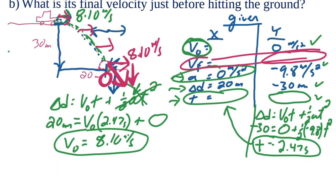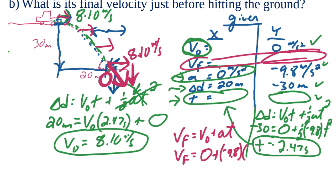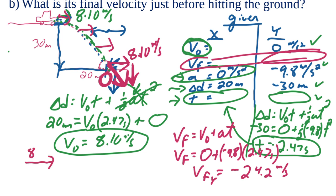To find the final vertical velocity, we use vf = v₀ + at, using only vertical values. Initial vertical velocity is zero, acceleration is −9.8 m/s², and time is 2.47 seconds. Solving gives a final vertical velocity of −24.2 meters per second — the negative sign indicating downward direction.